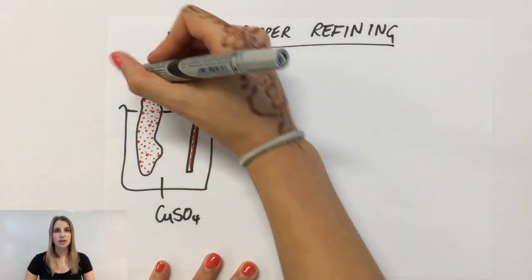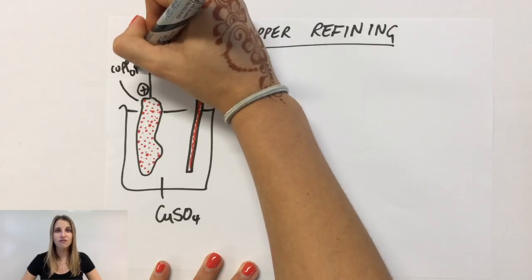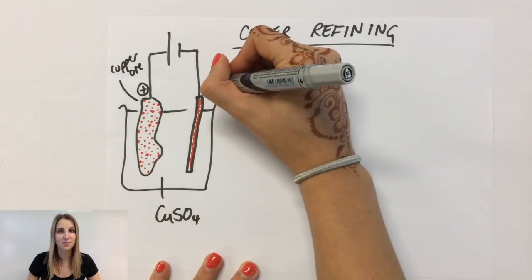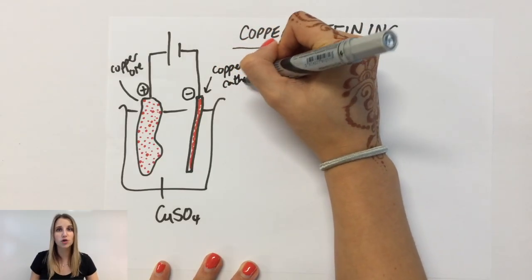At the anode, what I've got is a piece of copper ore, which is just rock that contains enough copper that it's worth extracting the copper from it. At the cathode is a really thin strip of pure copper metal.